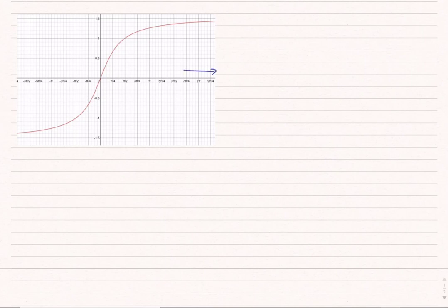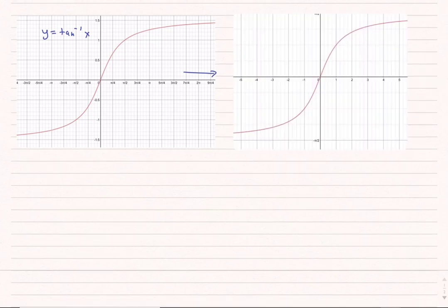As x gets larger and larger, it looks like my inverse tangent — and let me label the graph — gets really close to a number that's about 1.5. If I remember anything about my inverse tangent function, its domain is negative infinity to positive infinity, but its range only goes from negative pi over 2 to positive pi over 2. Changing the y-axis markings to step in terms of pi, it looks like as x gets larger and larger, my output approaches the asymptote at y equals pi over 2.